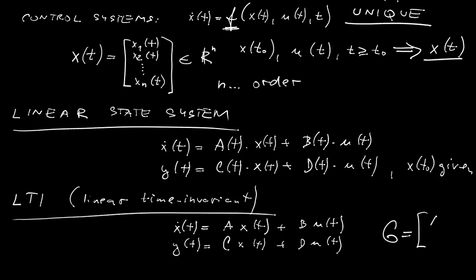Now sometimes we use the convenient and compact expression that our system G is described by this quadruple of matrices A, B, C and D. And we use this graphical symbol to show that G is not just a matrix but really a dynamical system described by this quadruple of matrices.